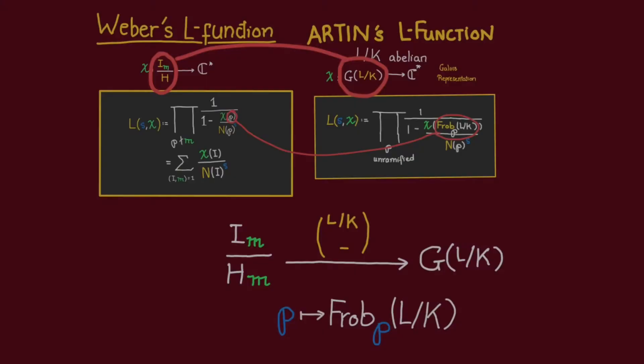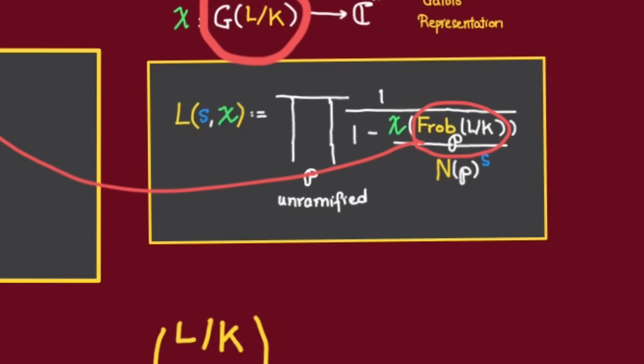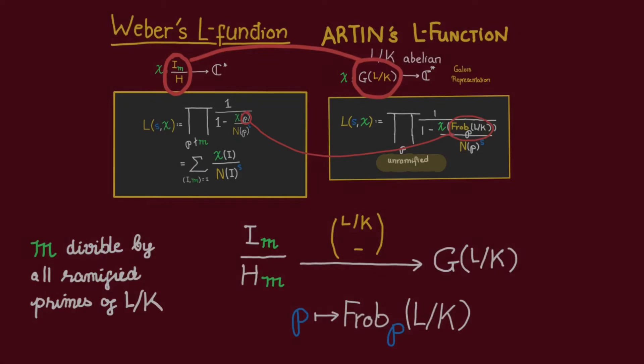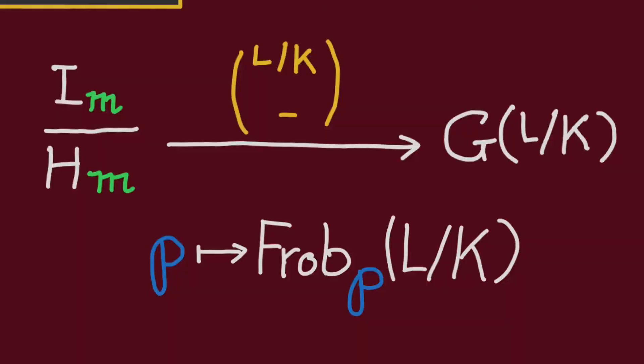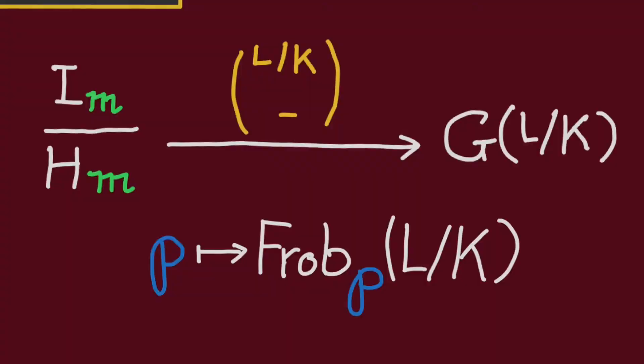Observe though that the Frobenius P elements are only defined for unramified prime P's. Thus, we need to pick this modulus M to be divisible by all primes that ramify in L. For such a modulus M, all the primes P in this domain here are unramified in L, and therefore there is a well-defined Frobenius element P.